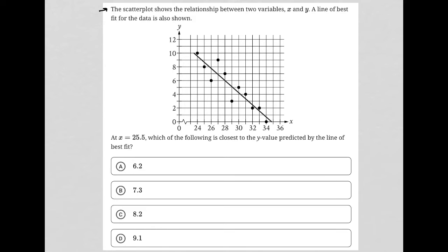This question says the scatterplot shows the relationship between two variables x and y. A line of best fit for the data is also shown. This is a diagram question, by the way, which just means anytime the digital SAT provides me with some visual input,